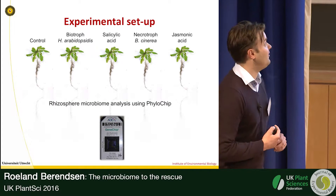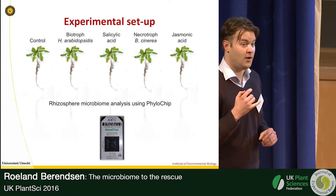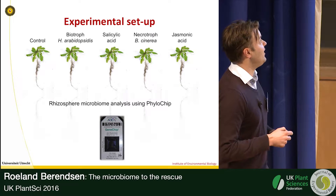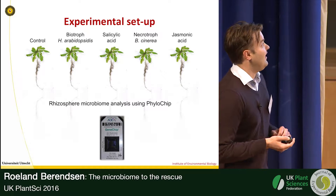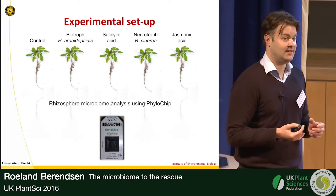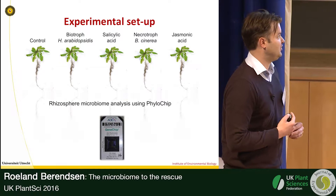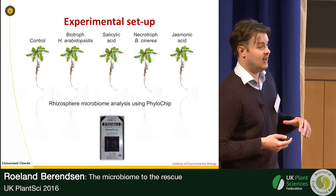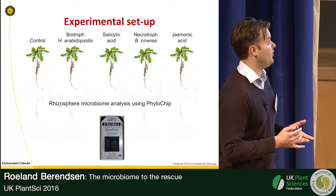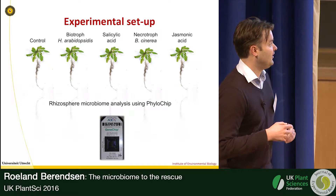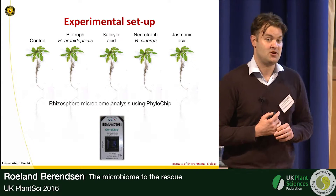These hormones activate local defenses and also lead to induction of systemic resistance. We wondered whether these two hormones are also involved in the systemic signaling that leads to recruitment of beneficial microbes. So we set up an experiment where we grew the model plant Arabidopsis for five weeks in natural soil, then infected the above-ground parts with the biotrophic pathogen Hyaloperonospora arabidopsidis or the necrotrophic pathogen Botrytis cinerea, and mimicked these diseases by repeatedly dipping leaves in salicylic acid or jasmonic acid hormone solutions.